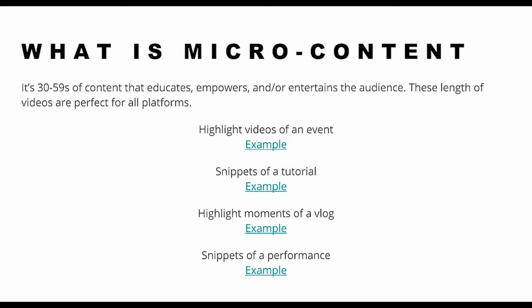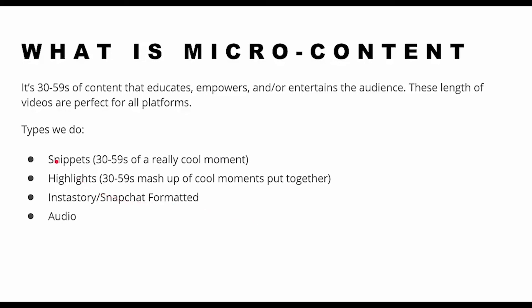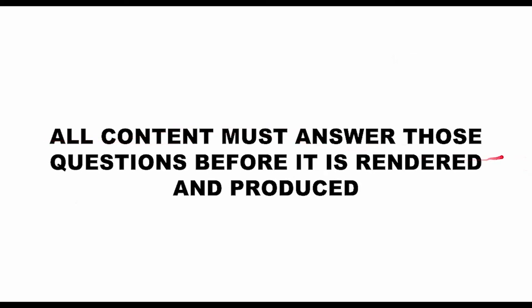So what is micro content? It's 30 to 59 seconds of content that educates, empowers, or entertains the audience — perfect for all platforms. Can't be boring. Examples are in the slides you can download: highlights of an event, snippets of a tutorial, highlights of a moment in the vlog, snippets of a performance. The difference between highlights and snippets: a snippet is a 30 to 59-second video of a really cool single moment in the vlog or footage. A highlight is a 30 to 59-second mashup of all the cool moments from beginning to end, all mashed together.